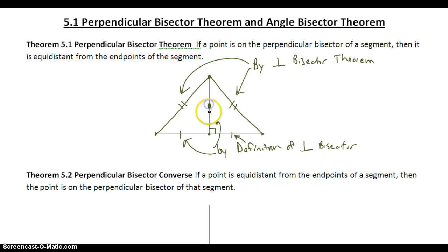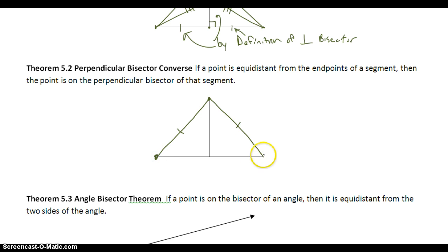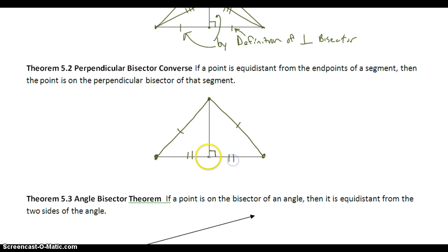If I pick this point right here — it's on the perpendicular bisector — it's going to be equidistant from either endpoint of the segment. The converse of the perpendicular bisector theorem says: if a point is equidistant from two endpoints, then that point is on the perpendicular bisector. So if we know that is true, then we can conclude that the segments are perpendicular and they're being bisected.